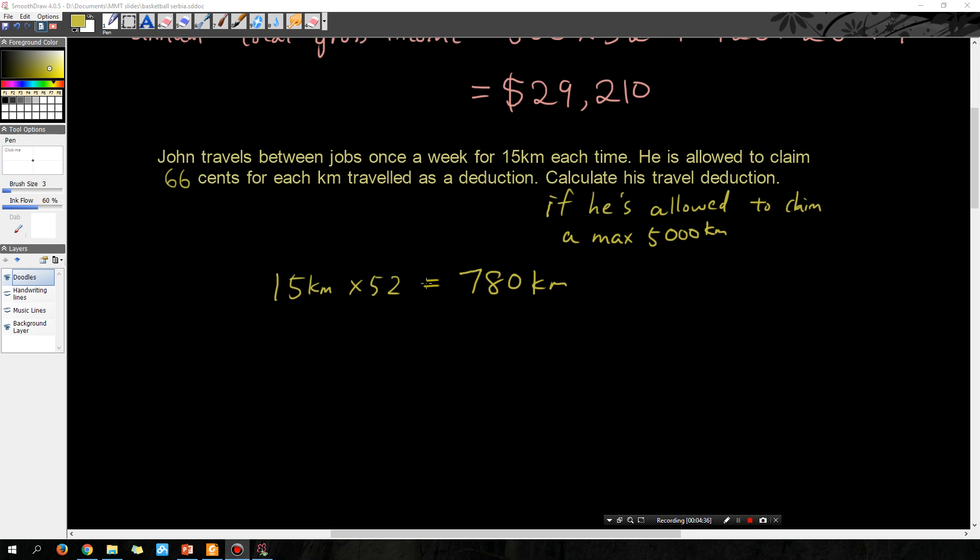Then we're going to multiply that by 0.66. So 780 times 0.66 and the answer is 514.8.